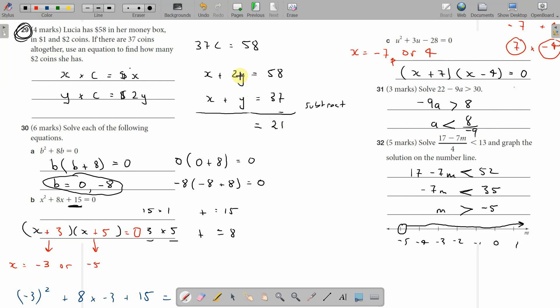2Y minus Y leaves Y. X minus X is nothing. So when we subtract the equations, we're left with Y = 21. The number of $2 coins is 21, and that's the answer.